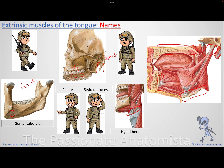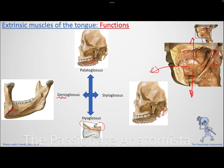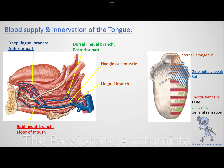Looking at an anatomical image: from the styloid process to the tongue is the styloglossus; from the palate to the tongue is the palatoglossus; from the genial tubercle to the tongue is the genioglossus; and from the hyoid bone to the tongue is the hyoglossus. Next we discuss the blood supply and innervation of the tongue.